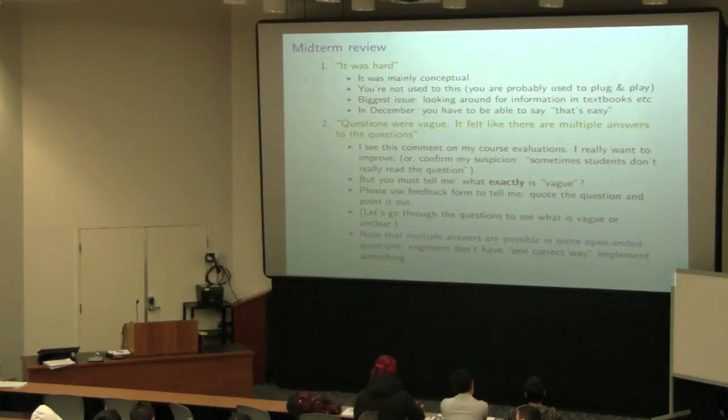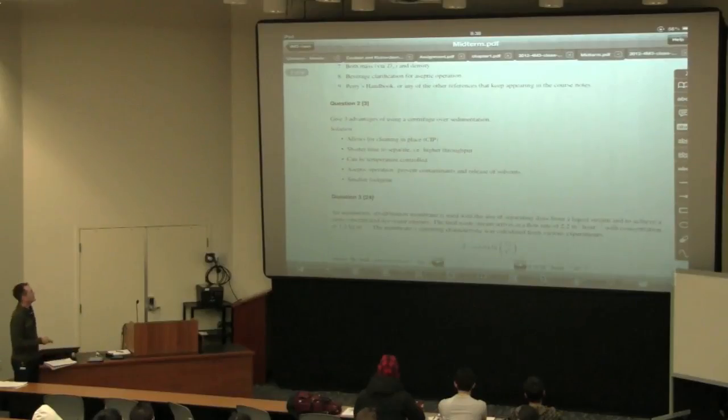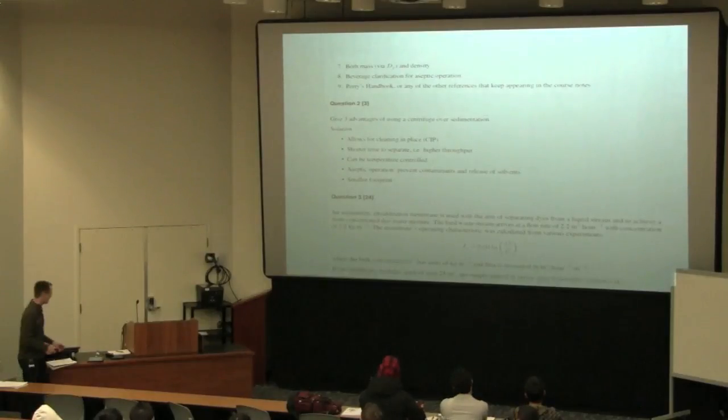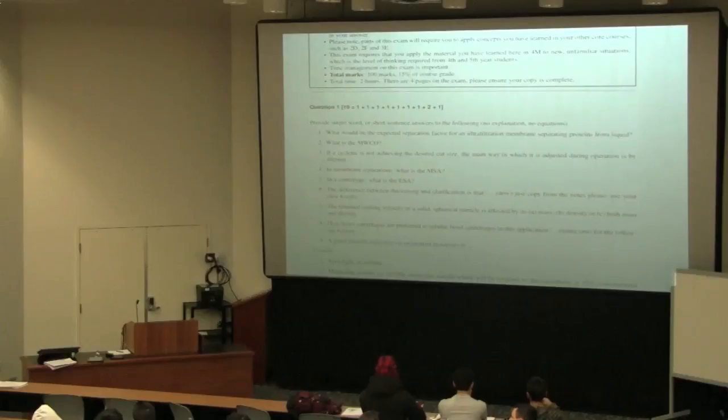When things are vague, please don't just say I felt the exam questions were vague. I would like you, if this is your opinion, to go back to the midterm. For example, here's question three. Give three advantages of using a centrifuge over sedimentation. To me, that's not vague. But to me, one question that may have been vague looking back is, what is the MWCO? So you're thinking to yourself, is Kevin wanting the acronym, molecular weight cutoff, or does he want some explanation? Either one I will accept as an answer. I'm not unreasonable. That may be, to me, that is the vaguest question on the midterm.